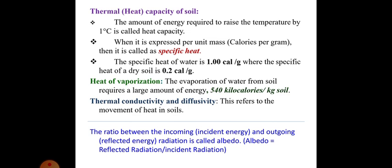First, we will discuss the thermal capacity of soil or heat capacity of soil. The amount of energy required to raise the temperature by 1 degree Celsius is called heat capacity. When it is expressed per unit mass, that is calories per gram, then it is called specific heat.